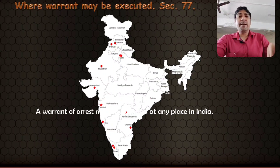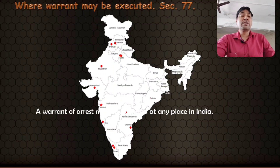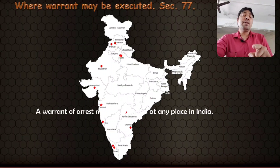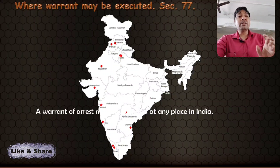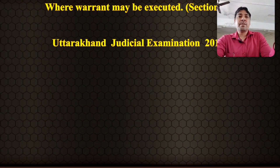For example, if a court in Maharashtra issues a warrant, that warrant can be executed in Kerala, Uttar Pradesh, Jammu and Kashmir, Arunachal Pradesh, or Kanyakumari — anywhere in India. There is no limitation. Once any court issues a warrant, that warrant may be executed at any place in India. The police officer can pursue and arrest the offender anywhere in India.